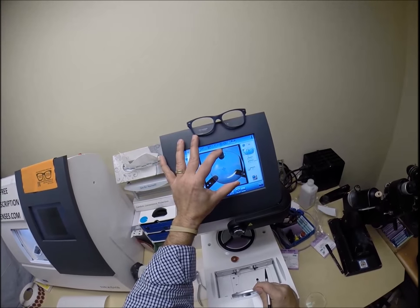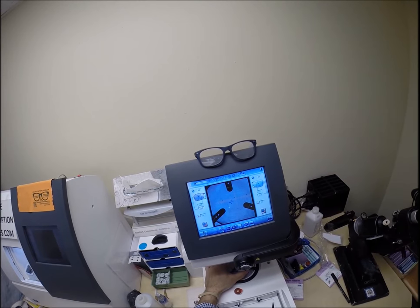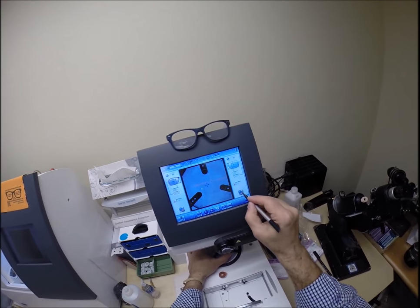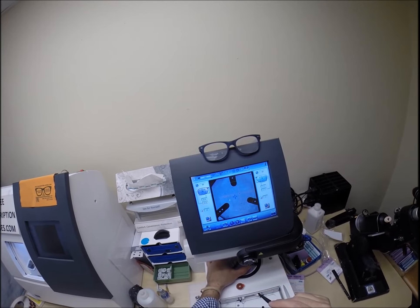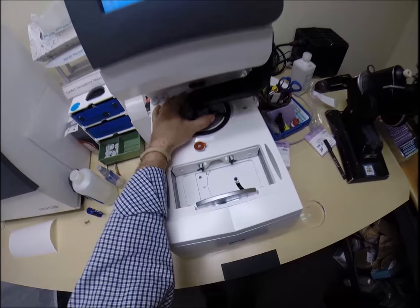And the reason I put those dots on there is it tells me that it's oriented in there just perfectly. It cannot be off kilter. So get everything lined up where it's looking good. Check one thing. We're looking good there. I'm going to hit the button. The arm's going to come down and place the block onto the right lens.